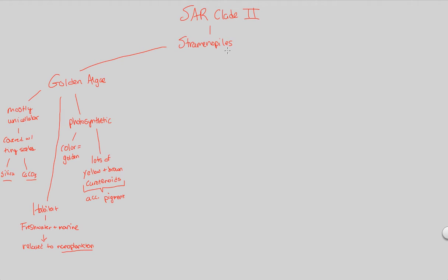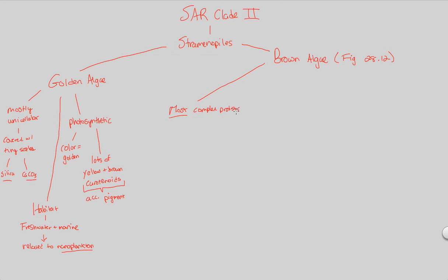The next one to cover is a very broad class of stramenopile known as the brown algae — very big, very diverse, very complex. Almost everybody already knows what brown algae are, they just don't know they're called brown algae. Figure 28.12 gives us a good idea of them. The important thing to know about brown algae is that they are actually the most complex protist. With complex structure comes complex function.